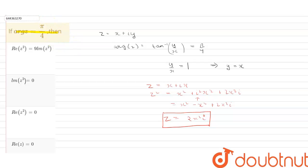Now let us consider the options. In first part it is given that real part of z squared equals 9 times imaginary part of z squared. From here we can see that real part of z squared equals 0.